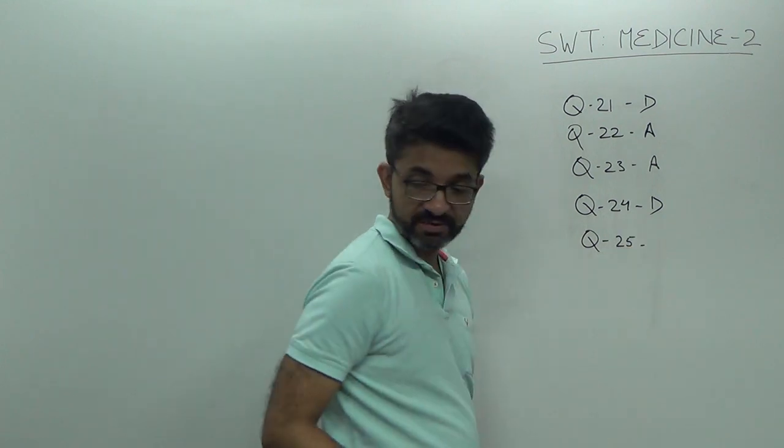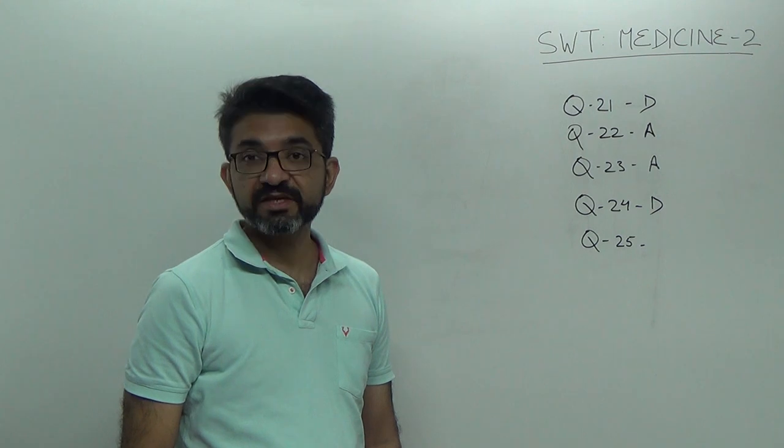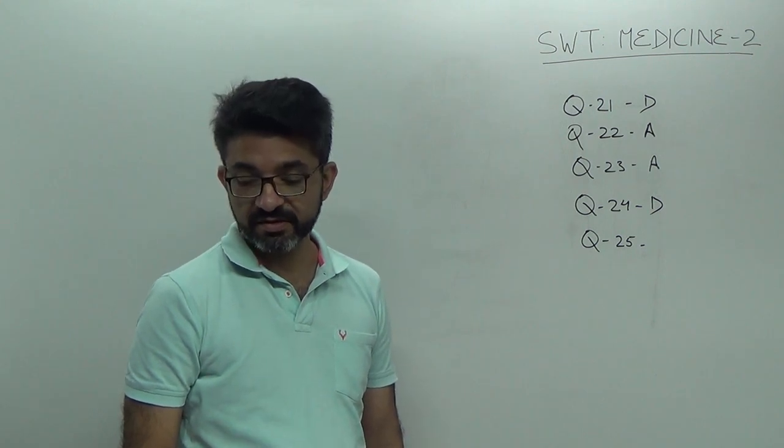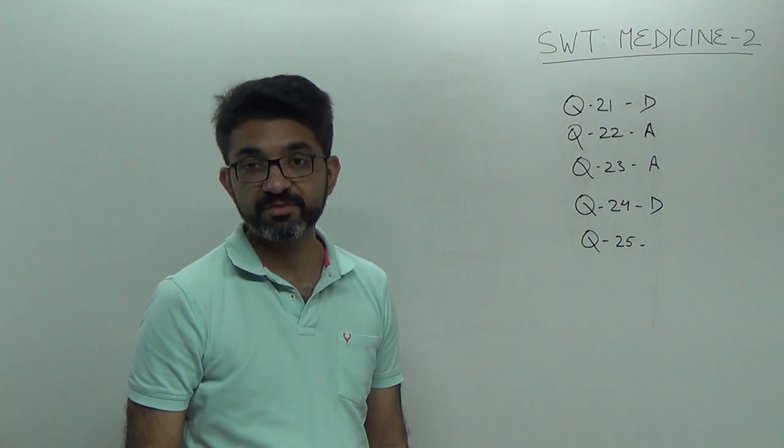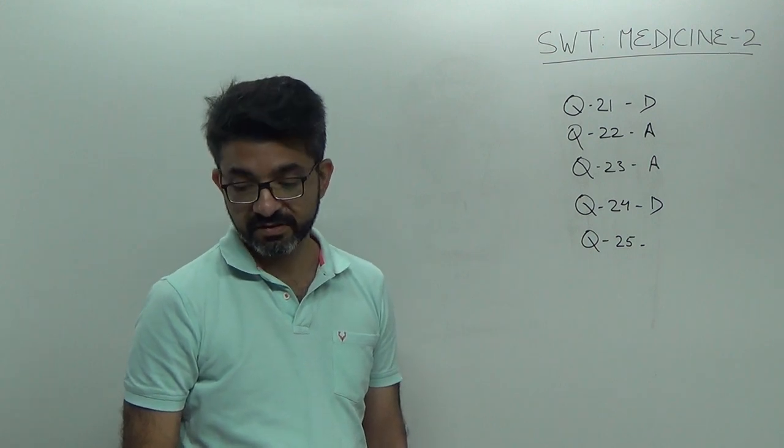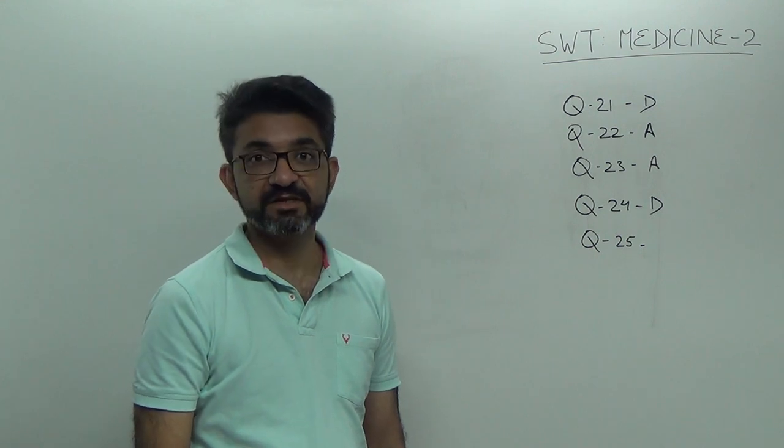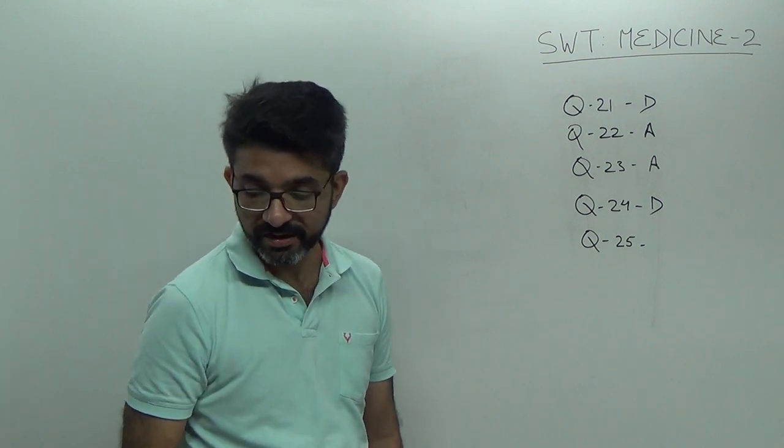Question number 25. The differentiating factor between ectopic ACTH secretion and Cushing syndrome is, that is, hypokalemic alkalosis. In Cushing syndrome and ectopic ACTH secretion, remember it is hypokalemic alkalosis.